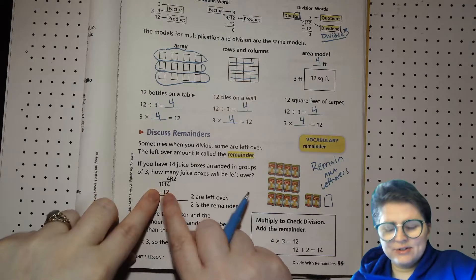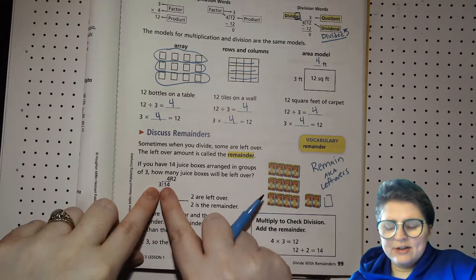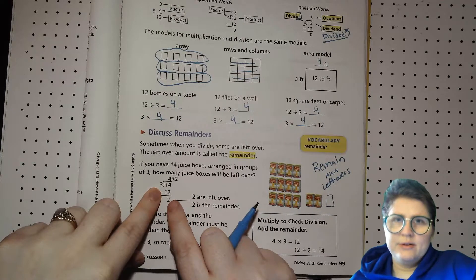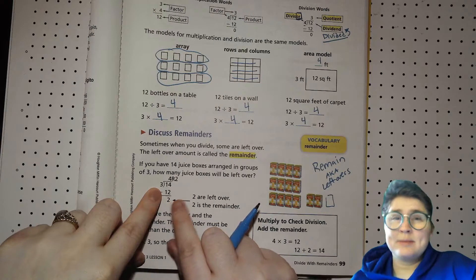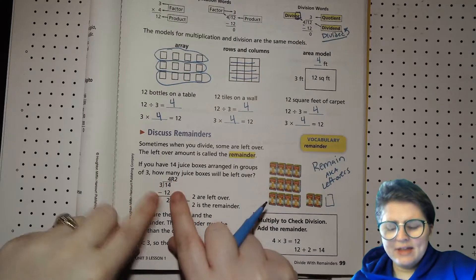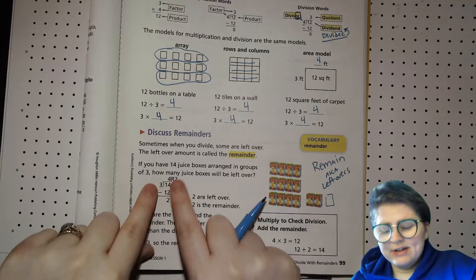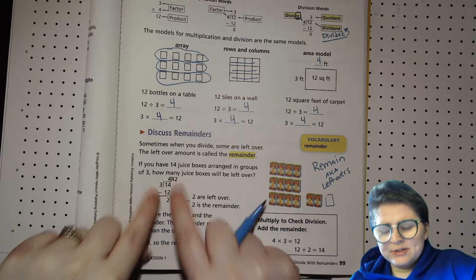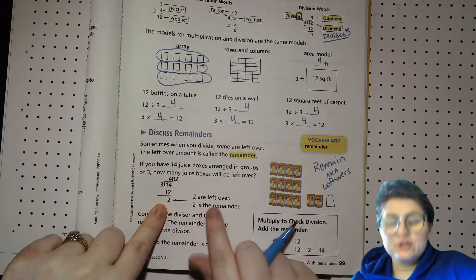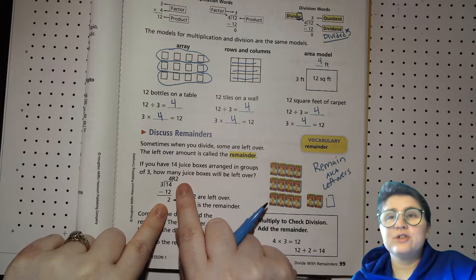The way that we write this is we have the 14 inside the little house. That's our dividend. Our divisor, the number that we're dividing 14 by, goes on the side. Then we think, what can you multiply 3 by to get close but not over 14? Well, 3 times 3 is 9. 3 times 5 is 15, so that's too high. So, 3 times 4, and that's 12. And you write that underneath the 14, and you subtract. Then you have 3 times 4 is 12, and you find the difference between 14 and 12, which is 2. There are 2 left over, so there's 2 in the remainder. You say 4 remainder of 2.